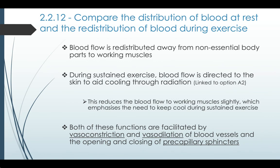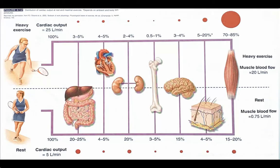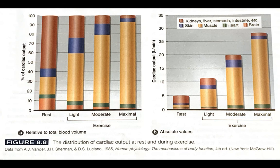As we can see on this diagram, when we're at rest the biggest supply of blood goes to the liver, digestive system, and kidneys. However, during exercise that reduces significantly, while blood supply to the working muscles increases significantly.